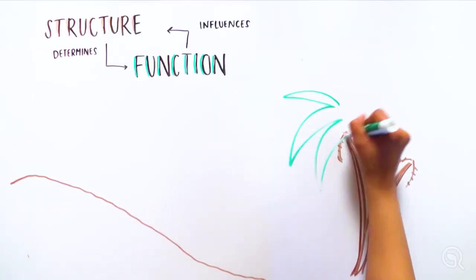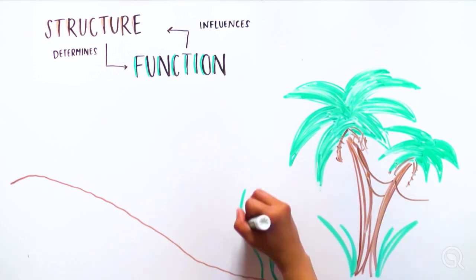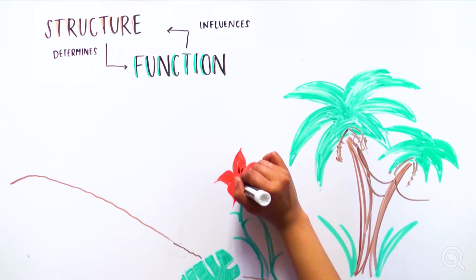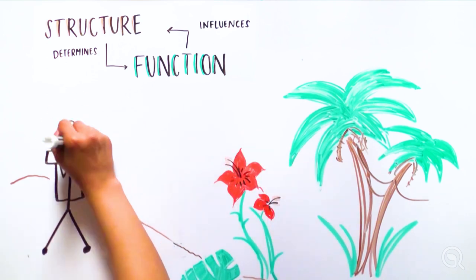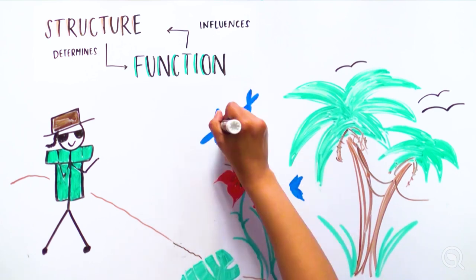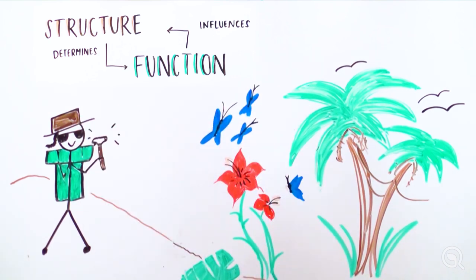Structure determines function and function also influences structure. If the structure of an ecosystem, body system, or molecule changes, the function changes. This principle makes sure that biological systems function properly since each cell and molecule is as precisely structured as a hammer.